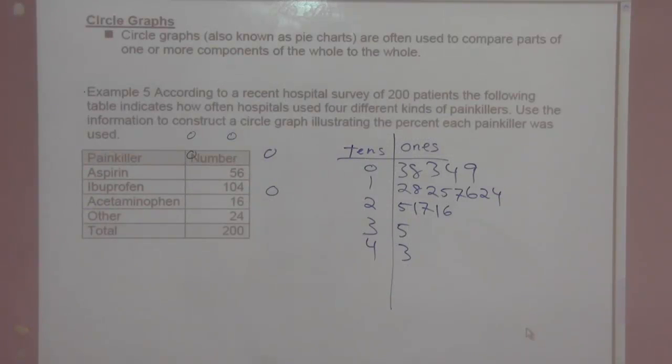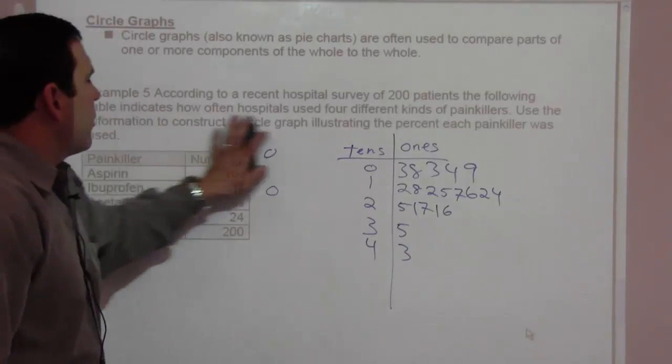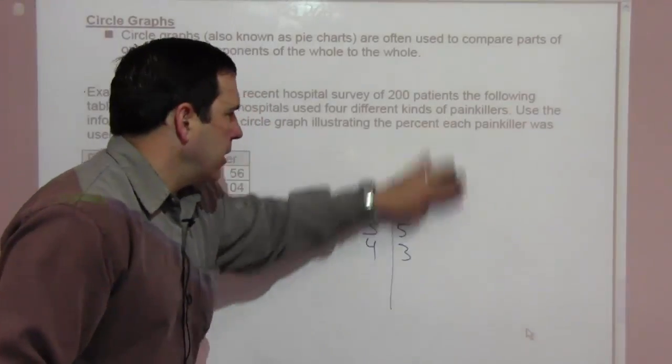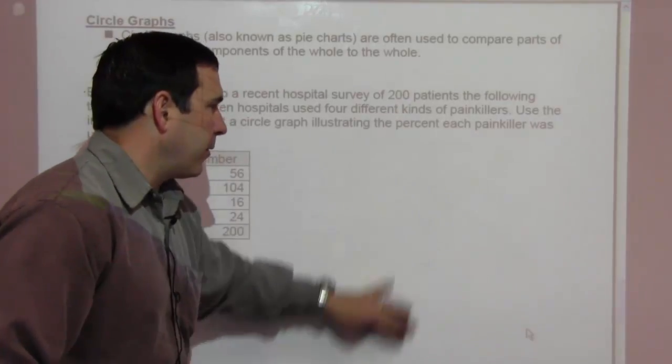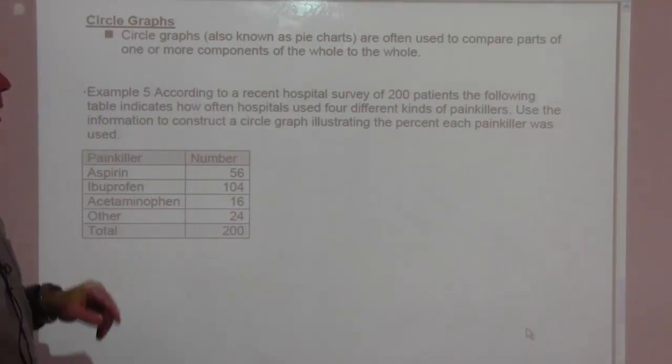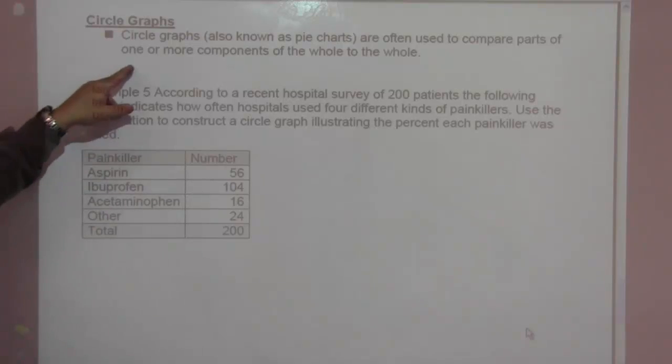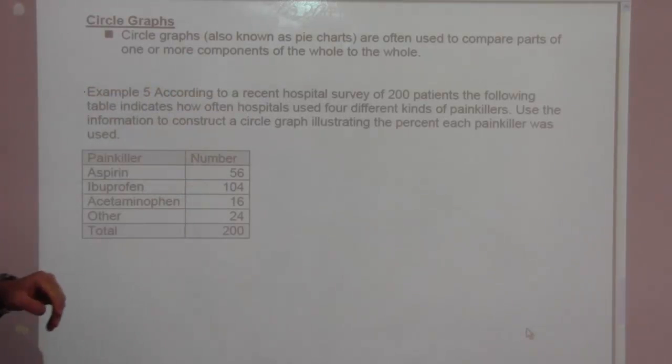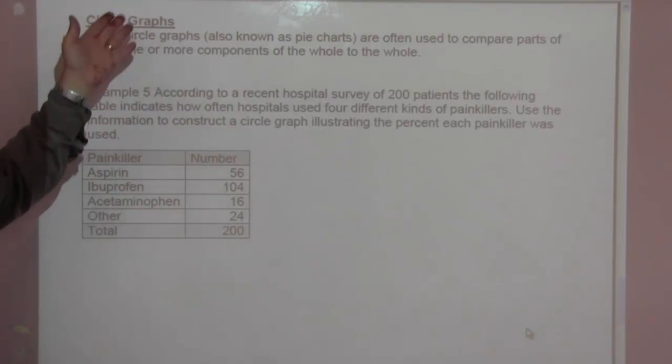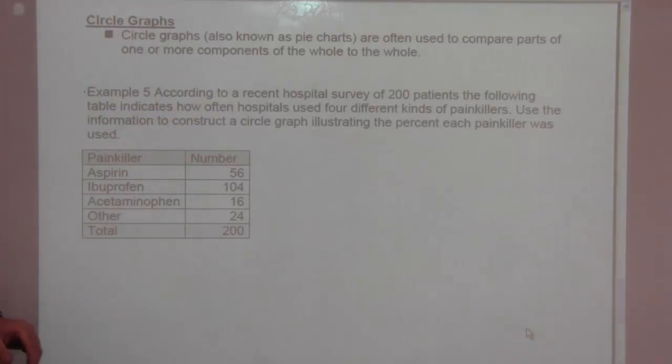Circle graphs. Circle graphs, also known as pie charts. And if you use Microsoft Excel, for example, they make pie charts really, really well. Are often used to compare parts of one or more components of the whole to the whole. So, parts of the whole to the whole. According to a recent hospital survey of 200 patients, the following table indicates how often hospitals used four different kinds of painkillers. Use the information to construct a circle graph or pie chart illustrating the percent each painkiller was used.